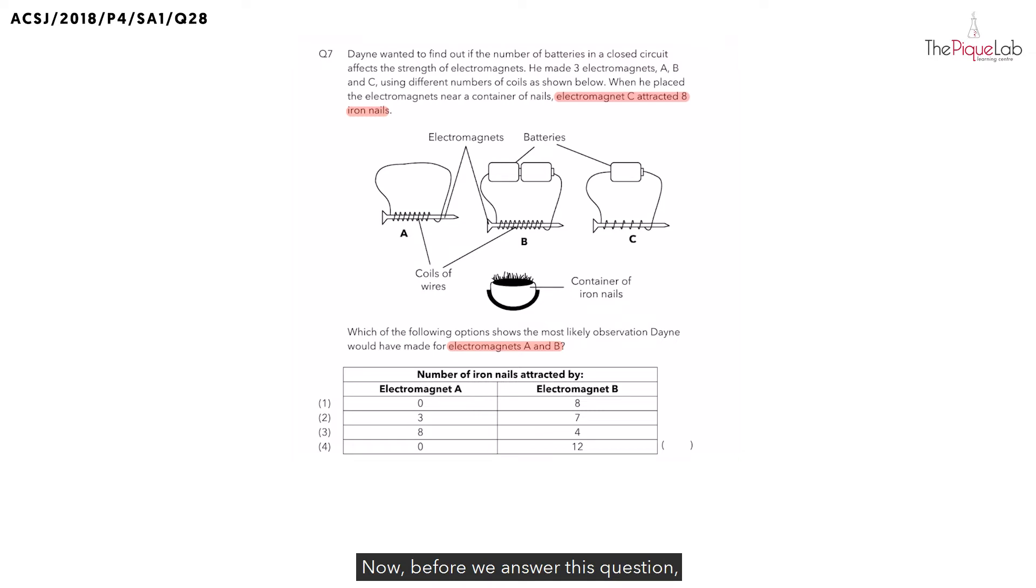Before we answer this question, let's recall: in order to create an electromagnet, we need to use electricity. And what is the source of electricity in this setup? It is going to be the batteries.